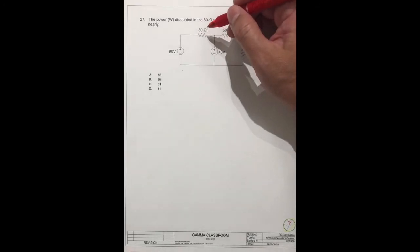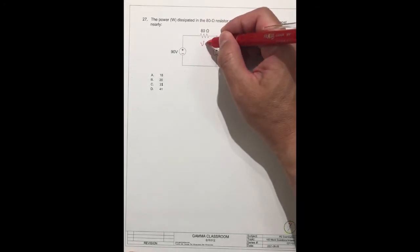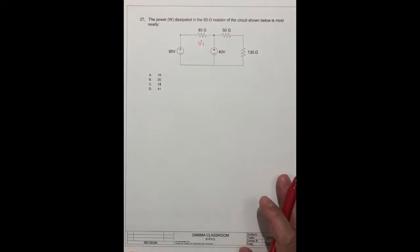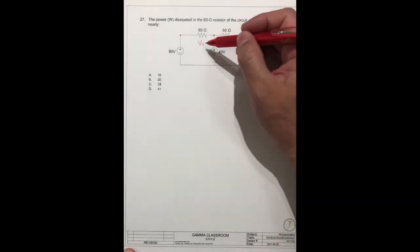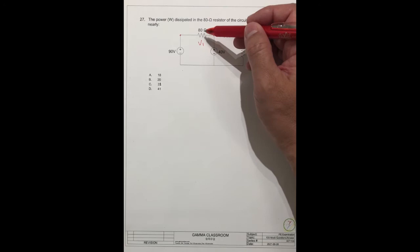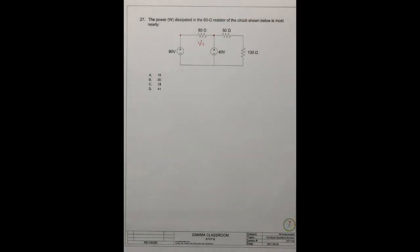We call this voltage V1, from this point to this point. So we can get the voltage. We know the voltage, we know the resistance is 80 ohm. Then we can do the calculation and find out the power dissipated.